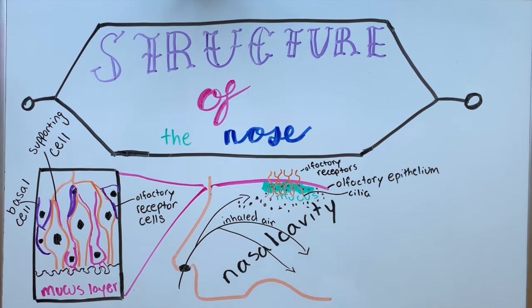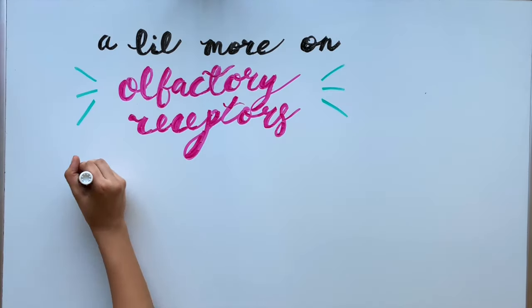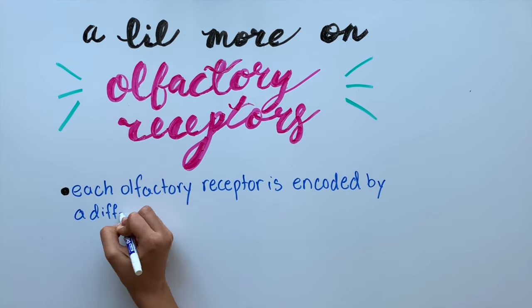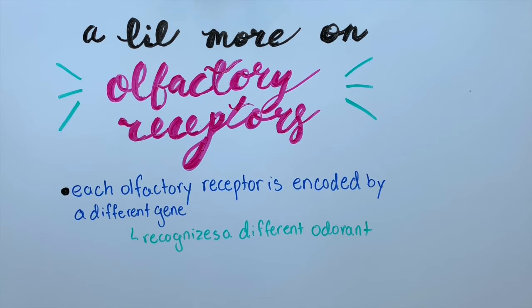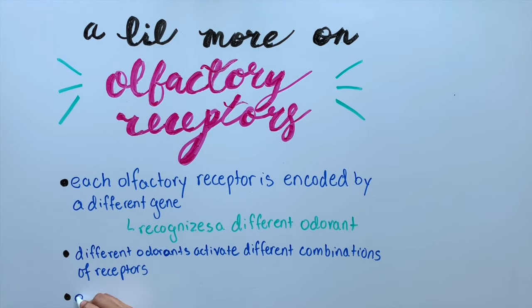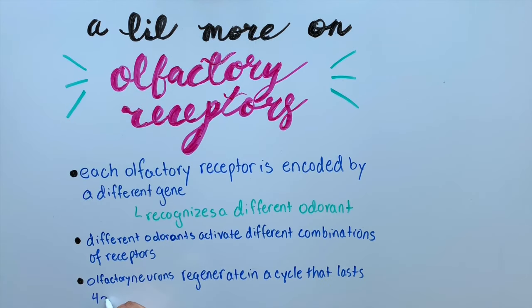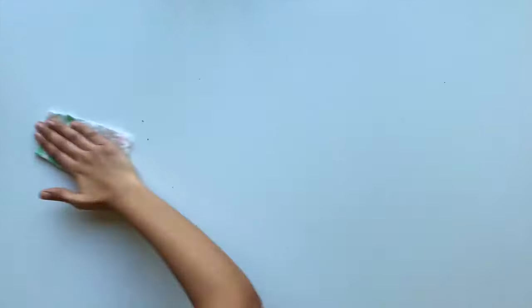To recognize specific smells, each olfactory receptor is encoded by a different gene and recognizes a different odorant, so different odorants activate different combinations of receptors. Also, olfactory neurons are constantly dying and regenerating in a cycle that can take about four to eight weeks.